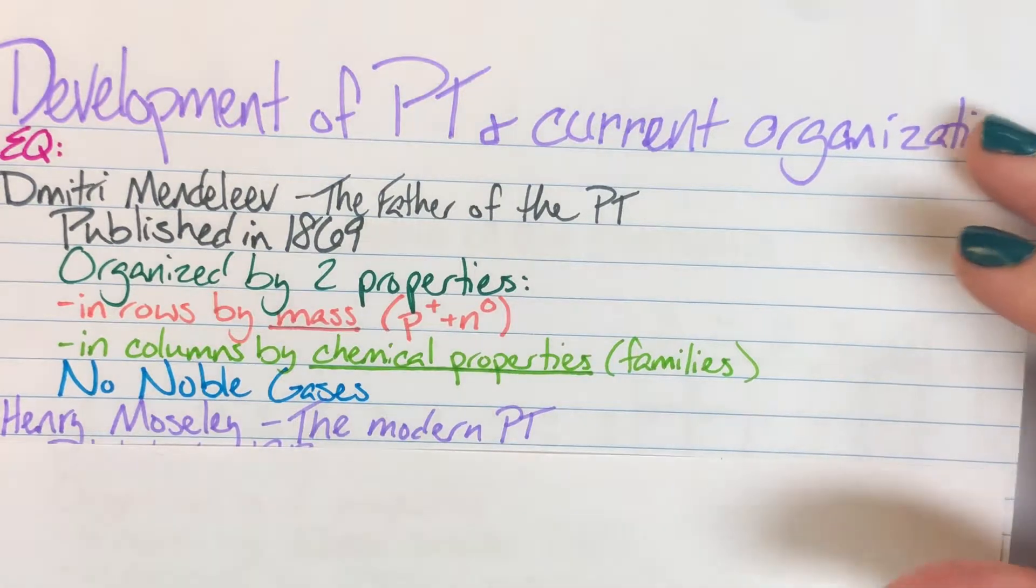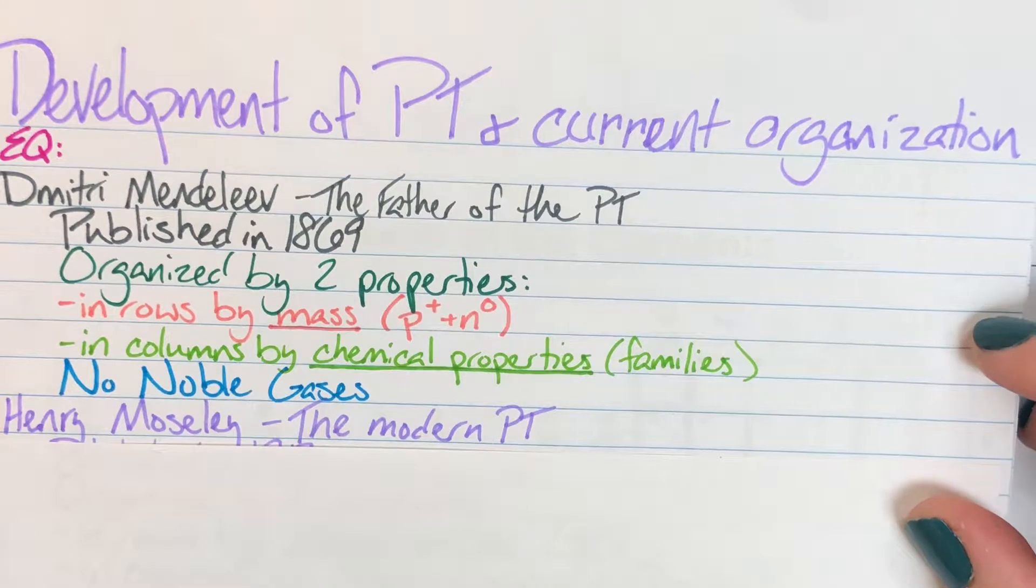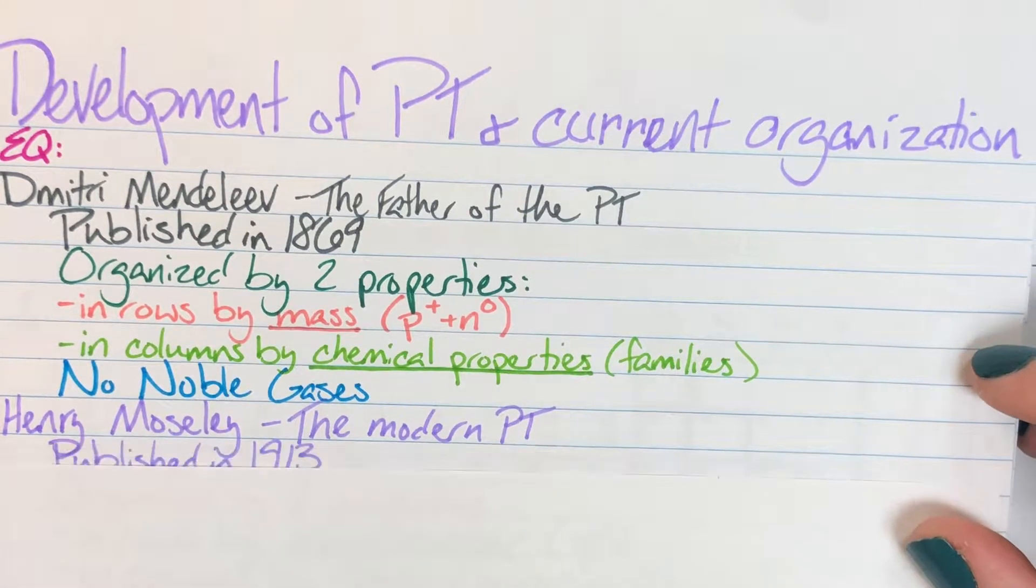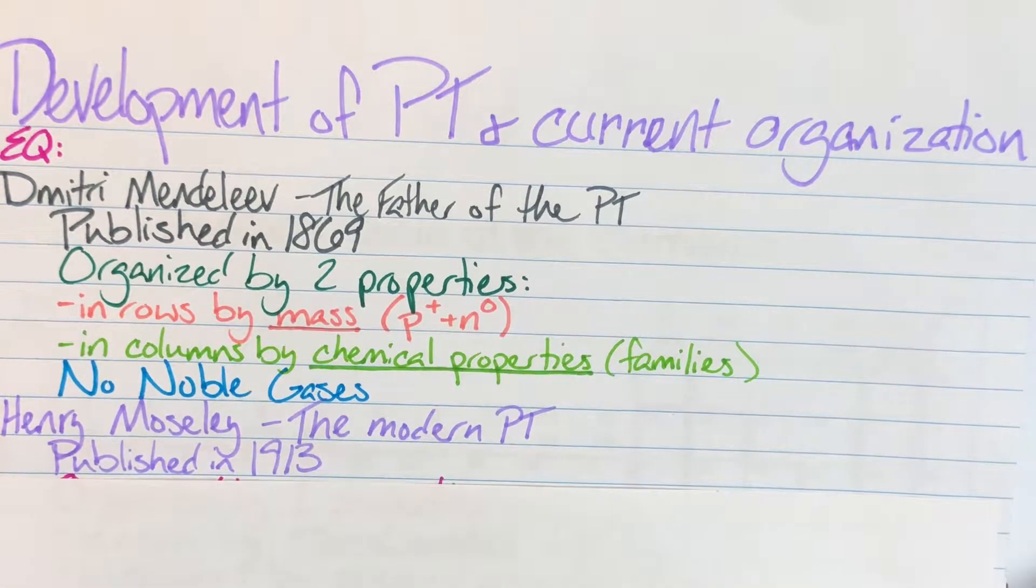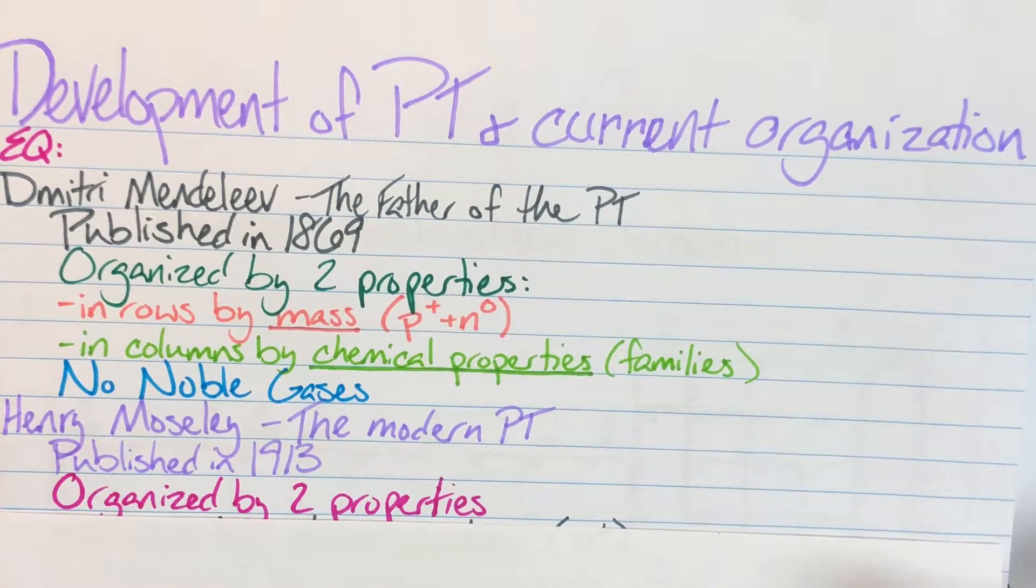Henry Moseley came along after Dimitri Mendeleev and his table is closer to the modern Periodic Table. His table was published in 1913 and was also organized by two properties. His two properties were different than that of Mendeleev though.